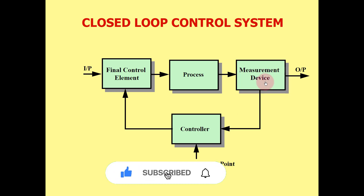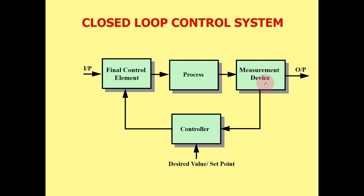The measurement device is a field instrument. For example, temperature transmitter, level transmitter, flow transmitter, and so on. The process can be any process. The final control element, for example, is a control valve or motor that controls the process.